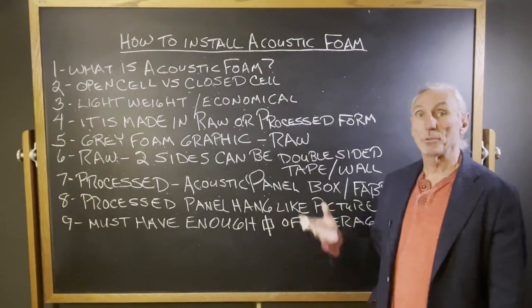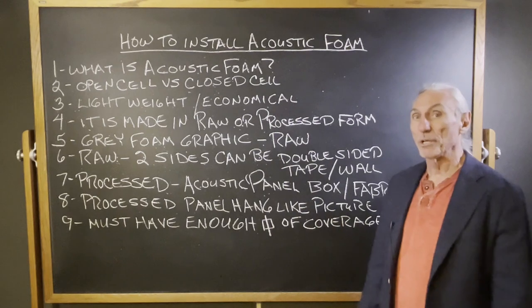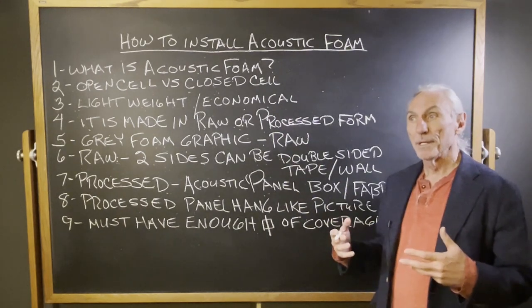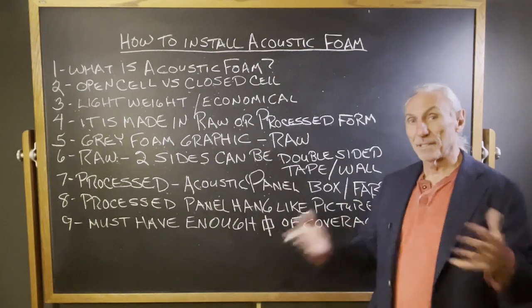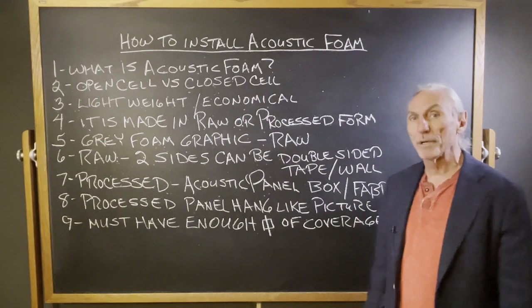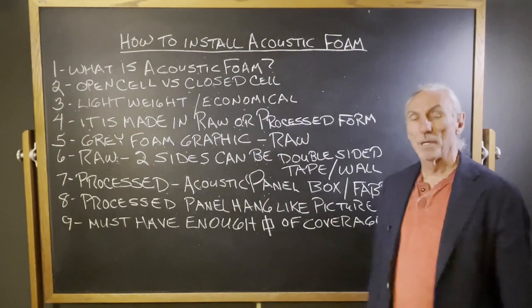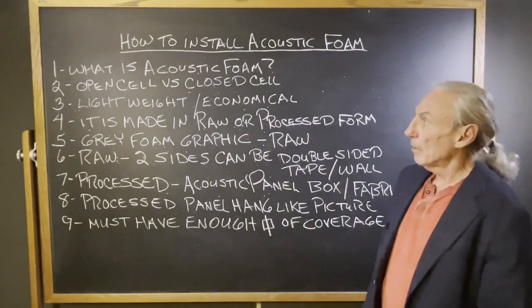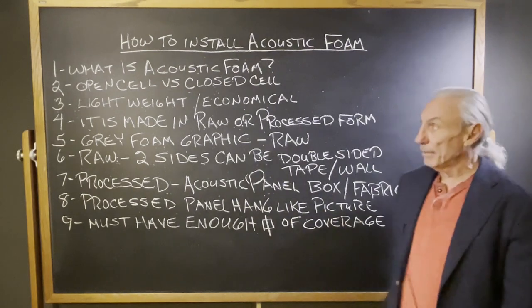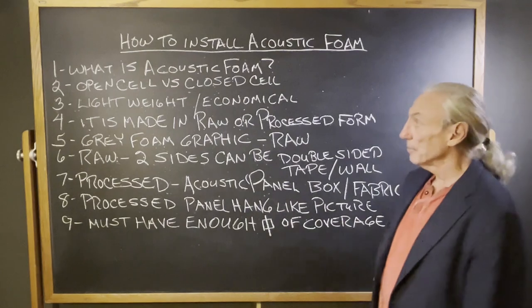Open cell is what we use to absorb sound. Just think the word open — it allows energy to go into the cells. Closed cell is more foam used for your seats, your cushions on your couch. It's more supportive in nature. Closed cell means more dense, more firm to support weight. Open cell has more open cells to allow air movement into them and thus absorption to occur.